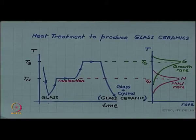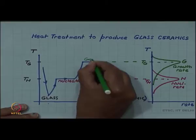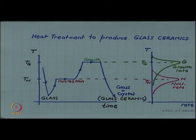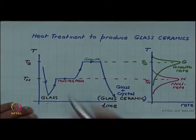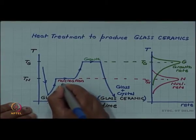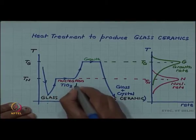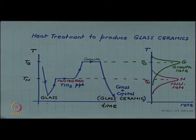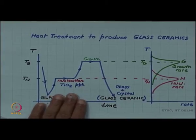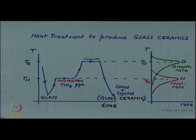One should also note that during the nucleation stage, some heterogeneous nuclei — for example, TiO₂ precipitates — form. We have seen that heterogeneous nucleation is easier than homogeneous nucleation. These TiO₂ precipitates form in the glass and they act as heterogeneous nucleation sites, which further enhance the nucleation rate.